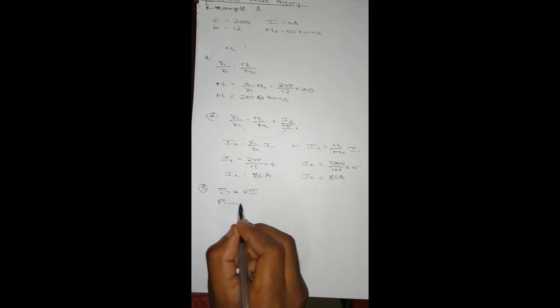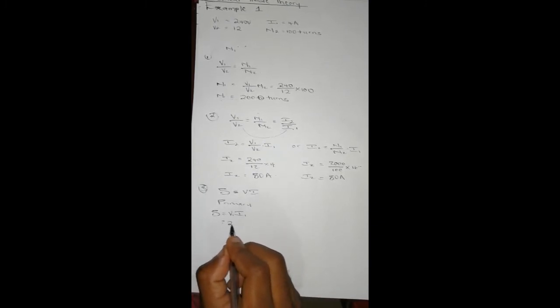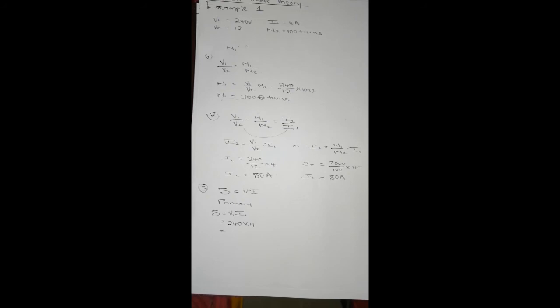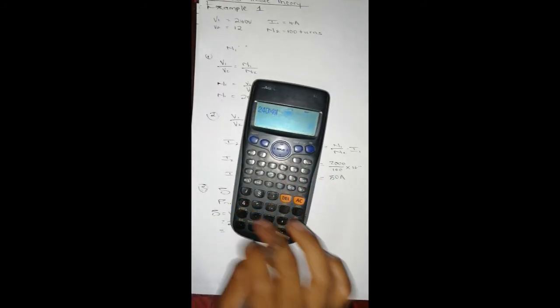So the primary side: S = V1 × I1. V1 is 240 and I1 is 4. Punch that into the calculator: 240 × 4, you get 960 VA.